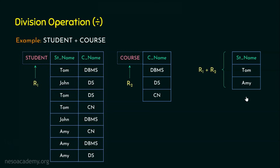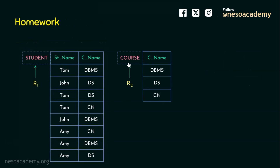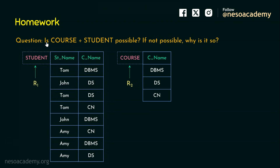I hope it's clear. All these values should appear in every tuple of the student relation. Let's see the homework question. Using the same student and course relations, the question is: is course divided by student possible? If not possible, answer in the comment section explaining why. If it is possible, then share the output. I hope you enjoyed this presentation — thank you for watching.